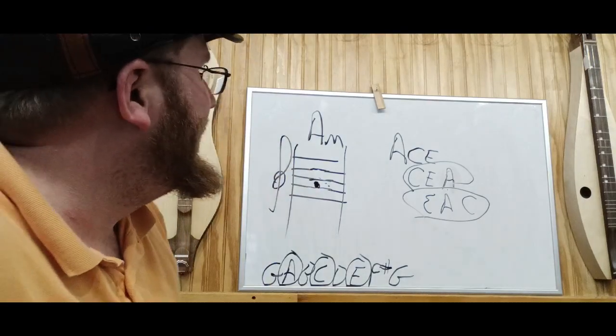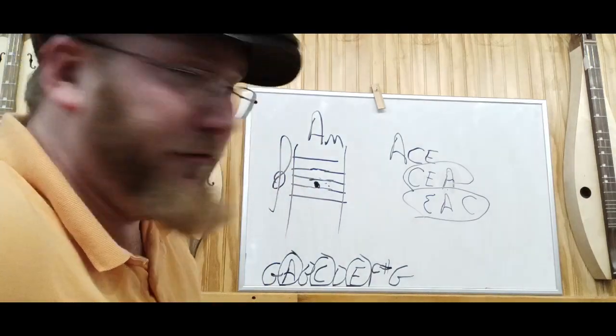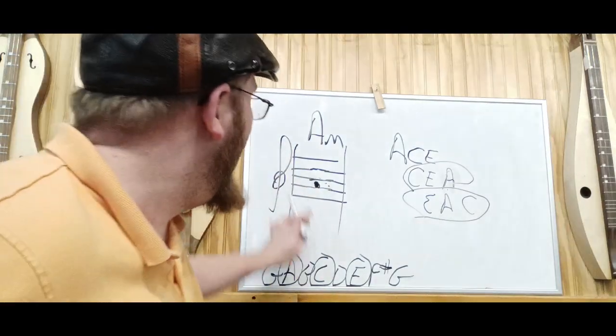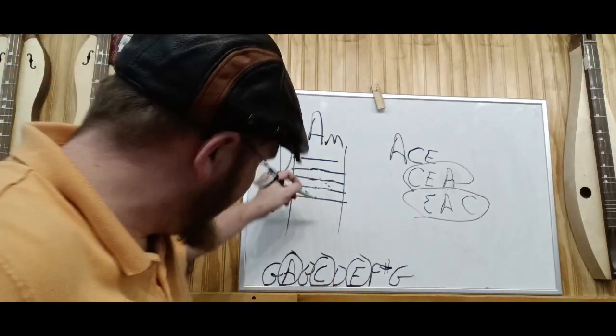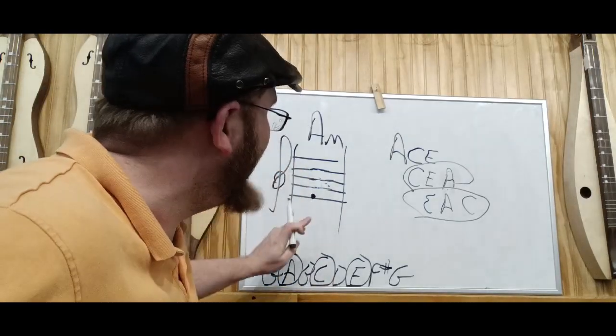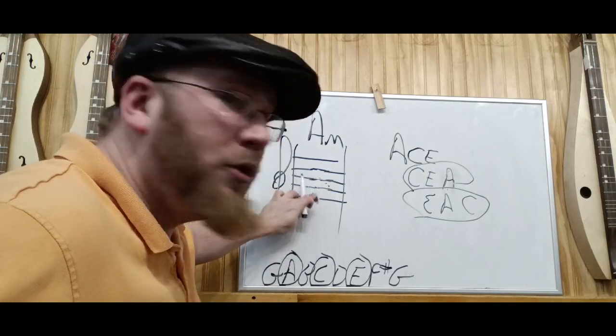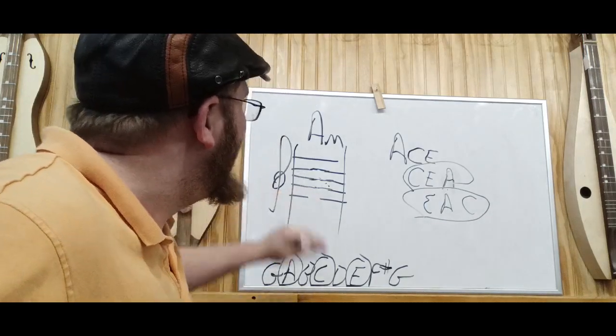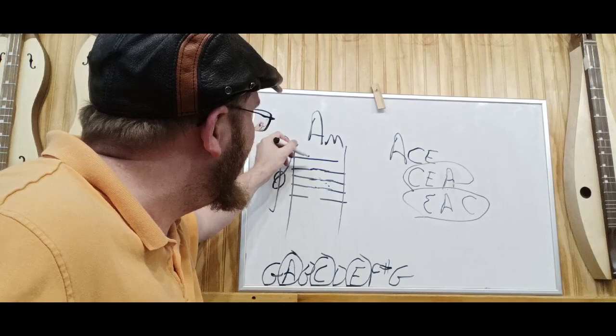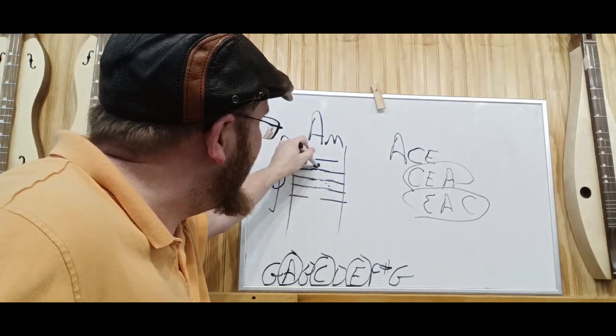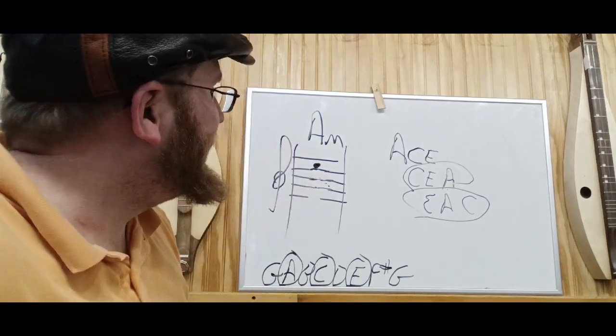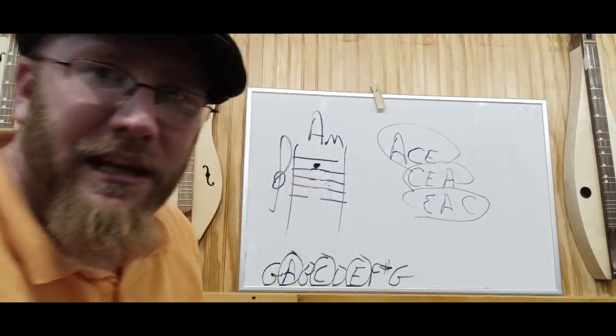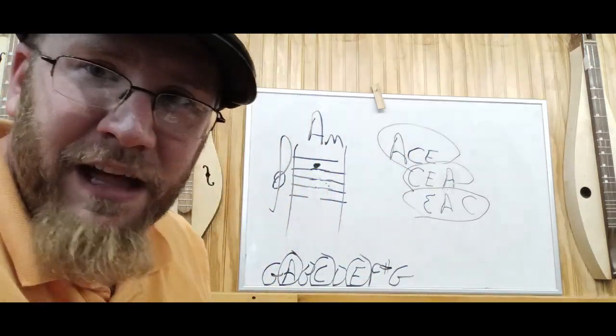And then lastly, the inversion with the E as the high note. Where's my E? Here's an E right here. I could do that one, but that's too low. Here is my E, right there. F, A, C, E. So we have A, C, E. See how simple that is, guys? Not difficult at all.